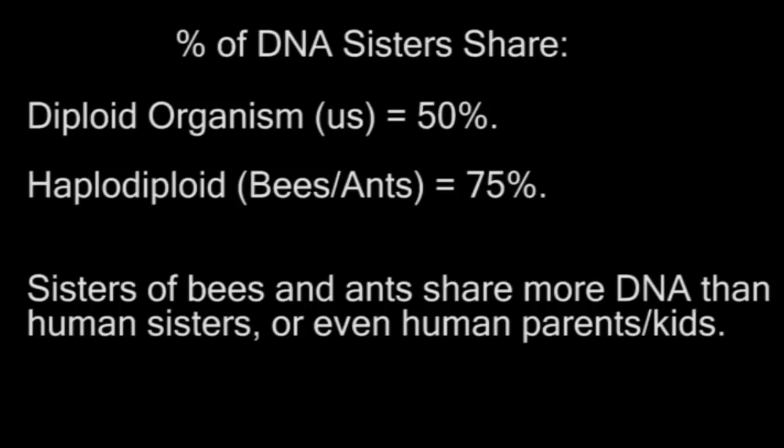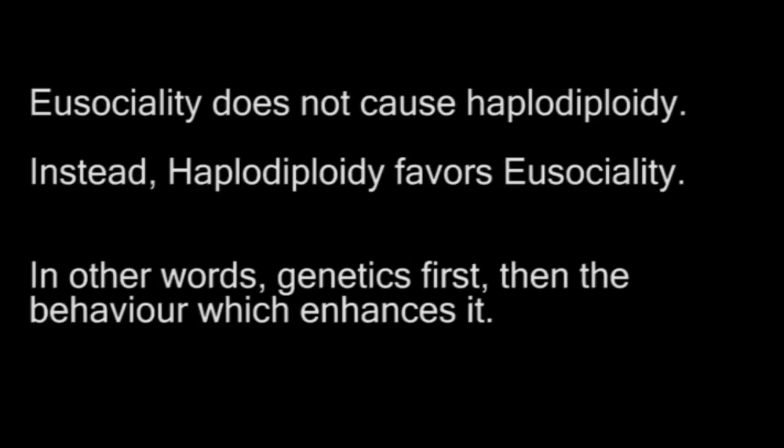From this perspective, it's more advantageous to help raise the offspring of your sisters than it is to raise your own offspring. In fact, it's so advantageous that eusociality has evolved independently 11 separate times within the haplodiploid order hymenoptera. Basically, for these insects with this unusual genetic configuration, their species survives better if they develop a social structure like this.